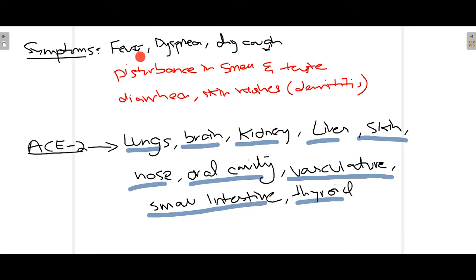Fever, which is usually high grade; dyspnea, which means shortness of breath — the person has trouble breathing; and cough, which is a dry cough, meaning not much mucus is produced. This cough is mostly dry, persistent, and very bothersome for the affected patient.